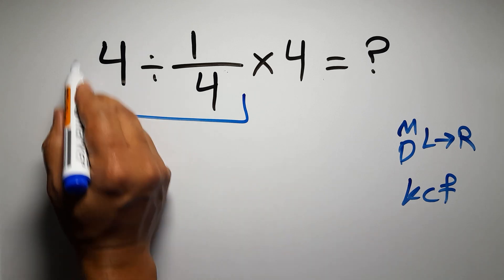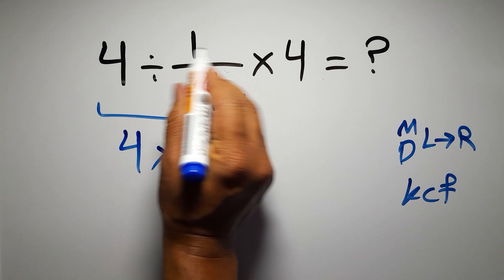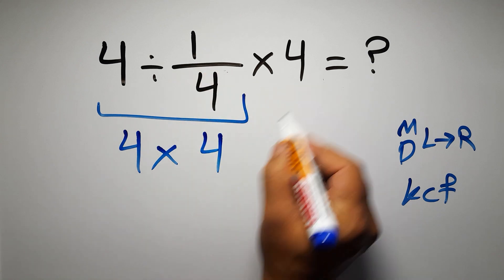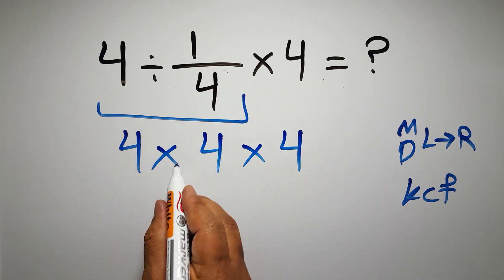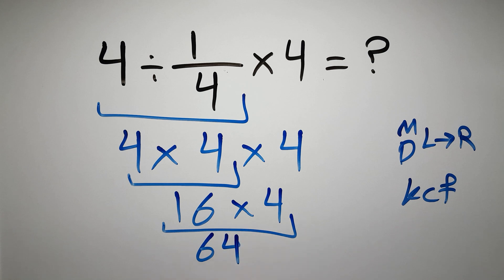We can write, keep the first fraction, change division to multiplication, and flip the second fraction. And times 4. 4 times 4 gives us 16, and 16 times 4 equals 64. And this is our final answer to this problem.